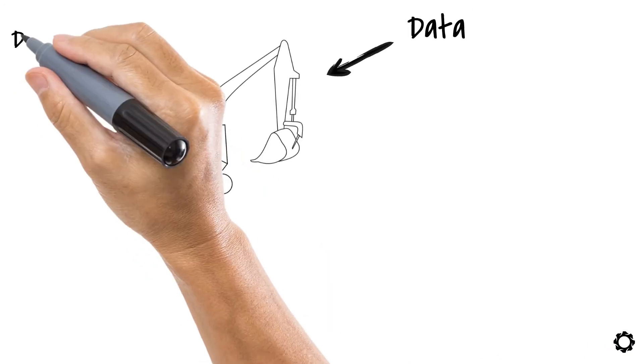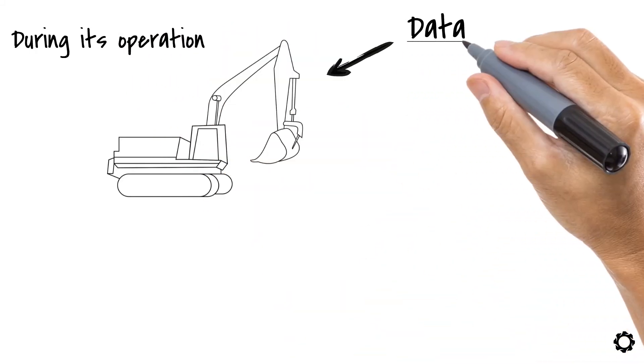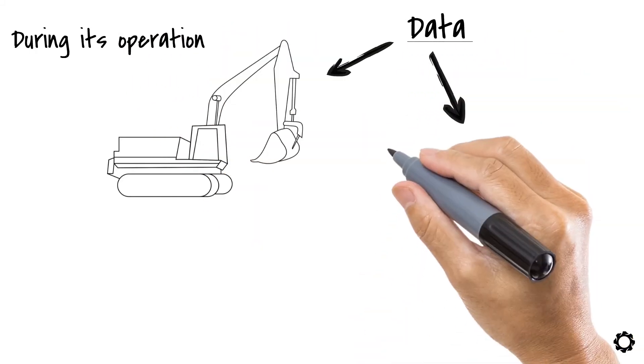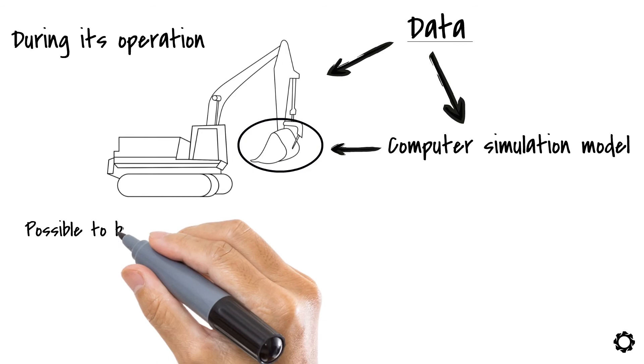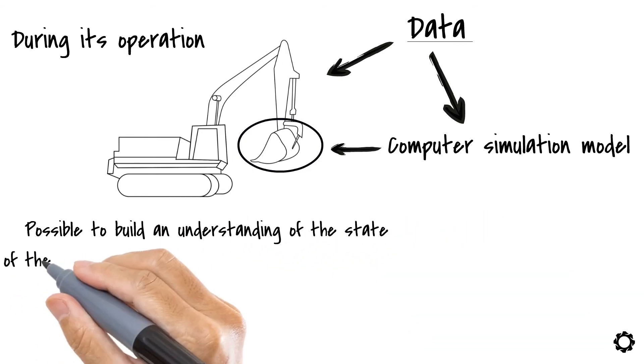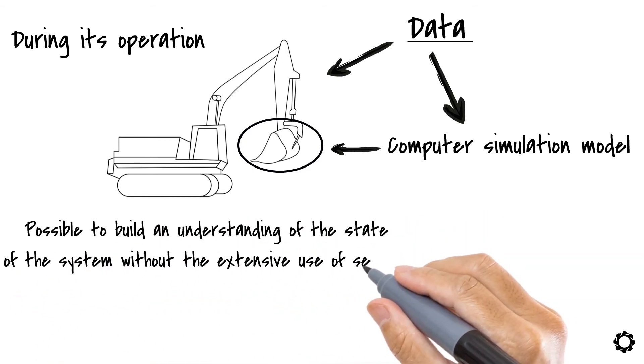Sensors can give you data about some part of the mechanical system during its operation. This data can be used as input for a computer simulation model making it possible to understand what is happening in other parts of the system.